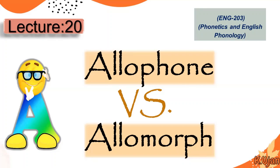Welcome everyone. Today we are going to talk about allophone versus allomorph — what are the differences between allophone and allomorph. This topic is very essential for learning pronunciation and making distinctions between pronunciations. This topic is from the subject English Code 203, Phonetics and English Phonology. This is our 20th lecture; we have already conducted 19 lectures in this series. So without further ado, let's begin.